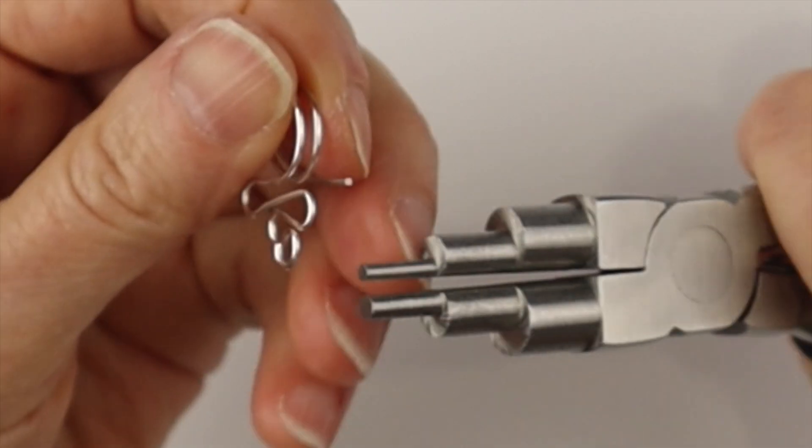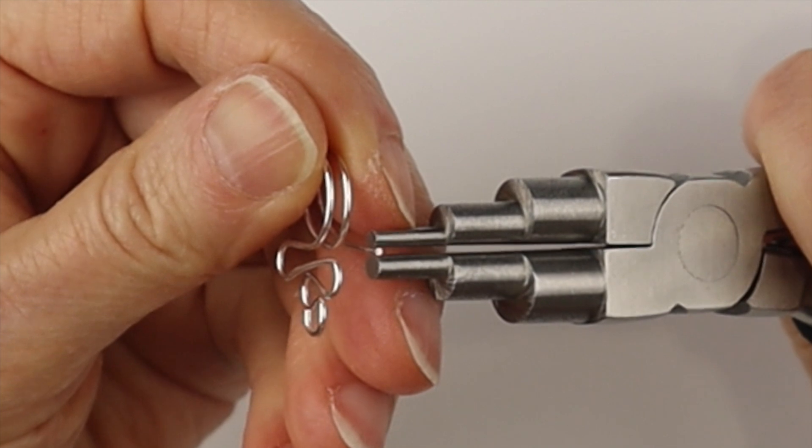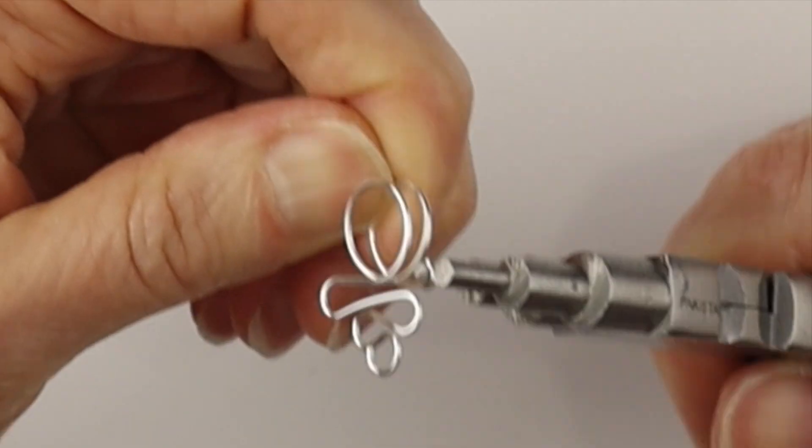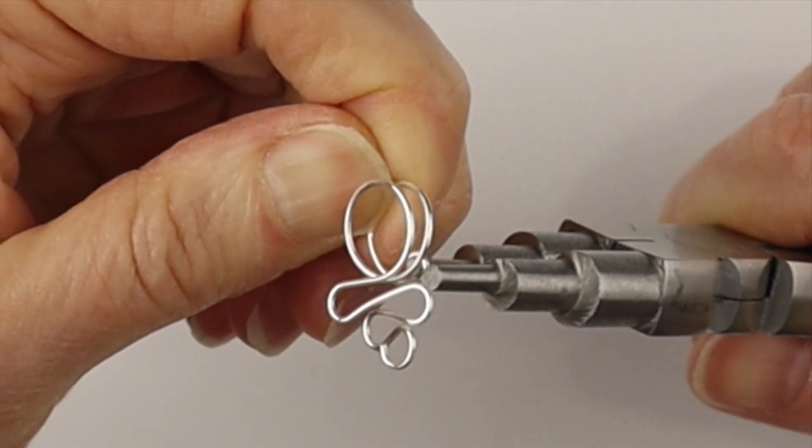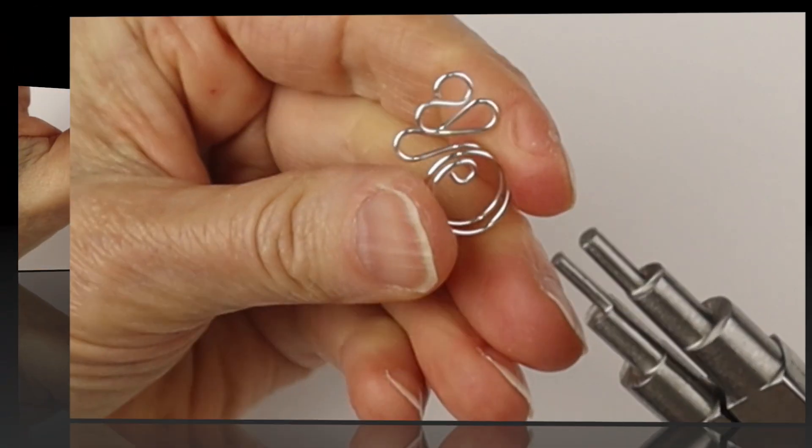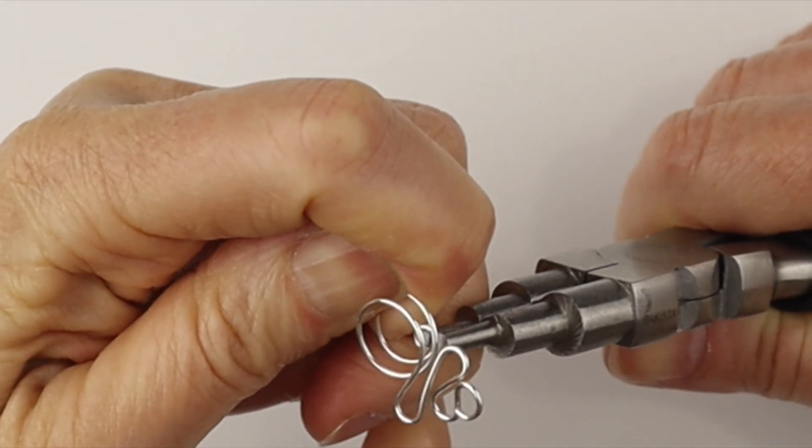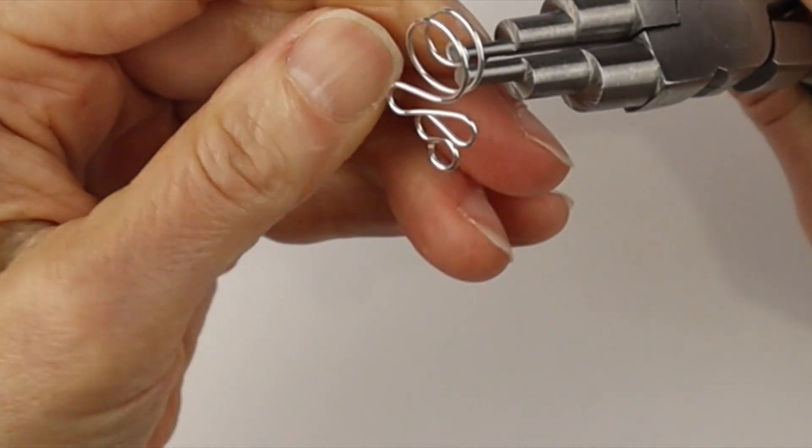And then I'm going to take the smallest part of the bail making pliers and turn the end into a closed loop. So just bring it right around to make a closed loop in the wire, and then just hold that loop and bring it in towards the middle.